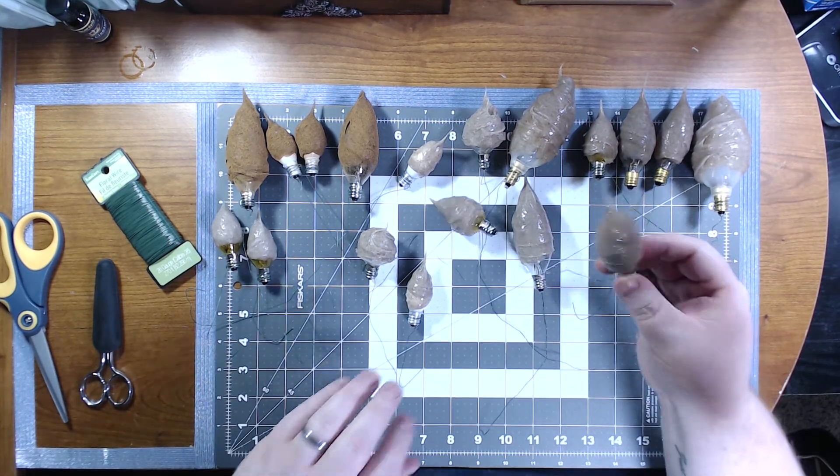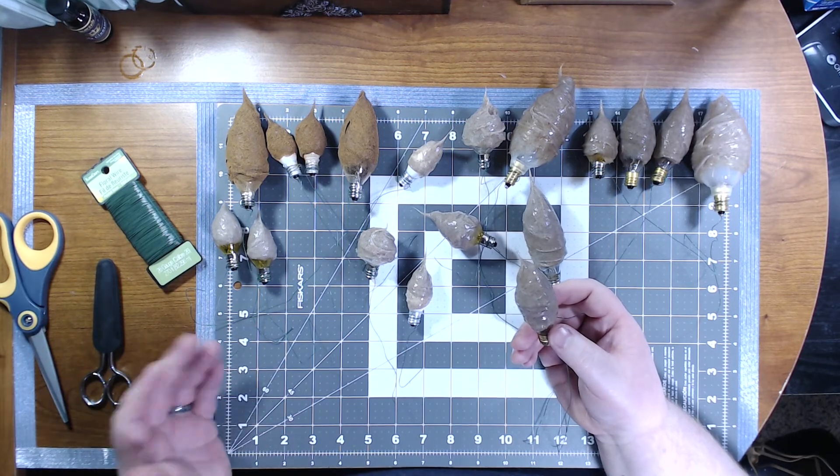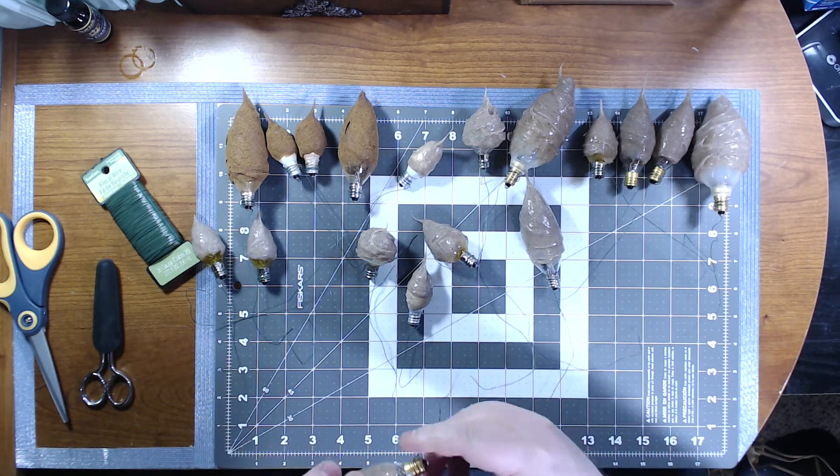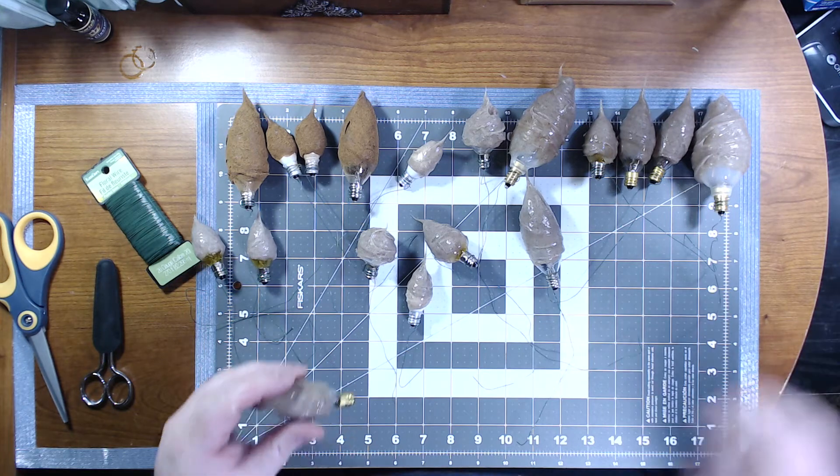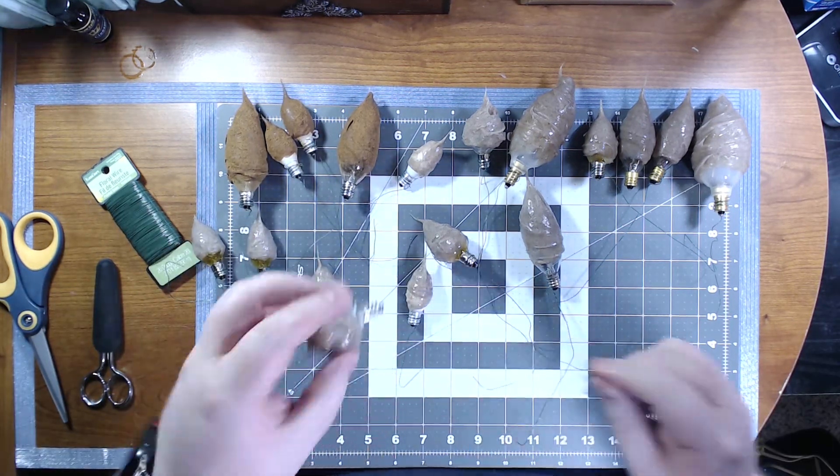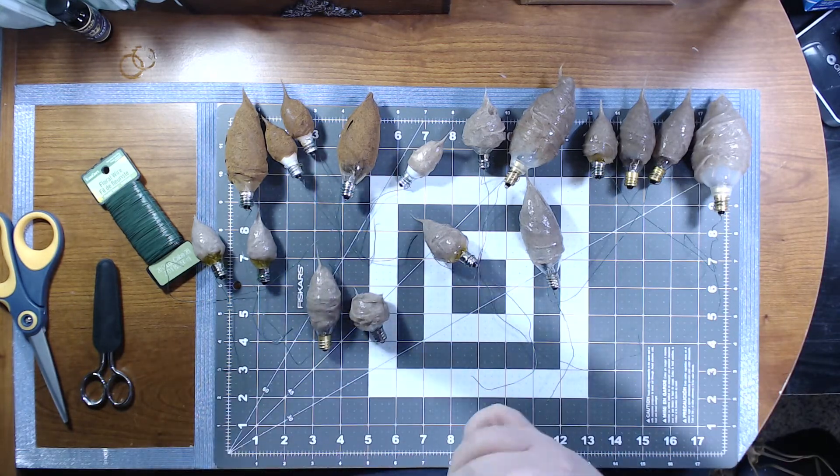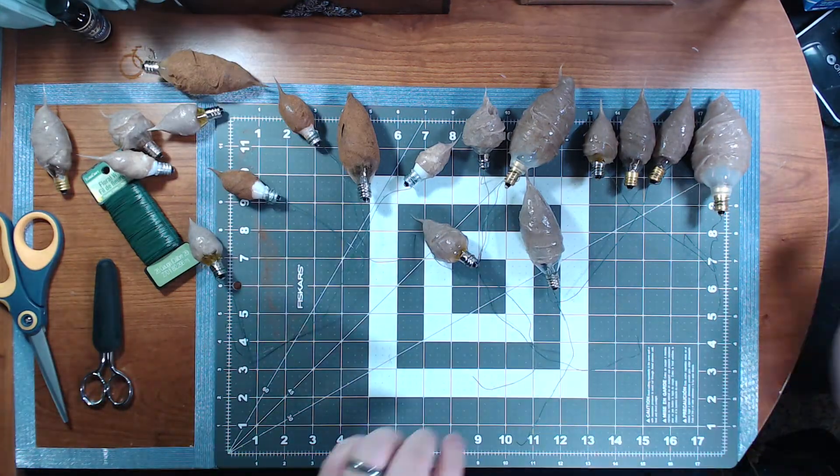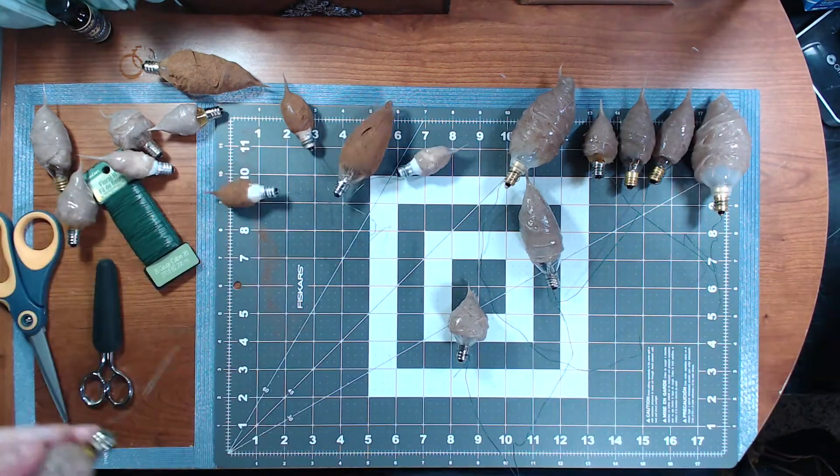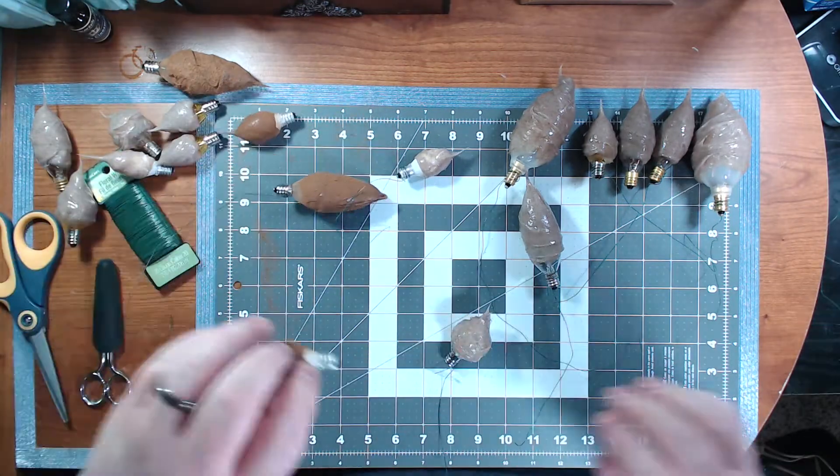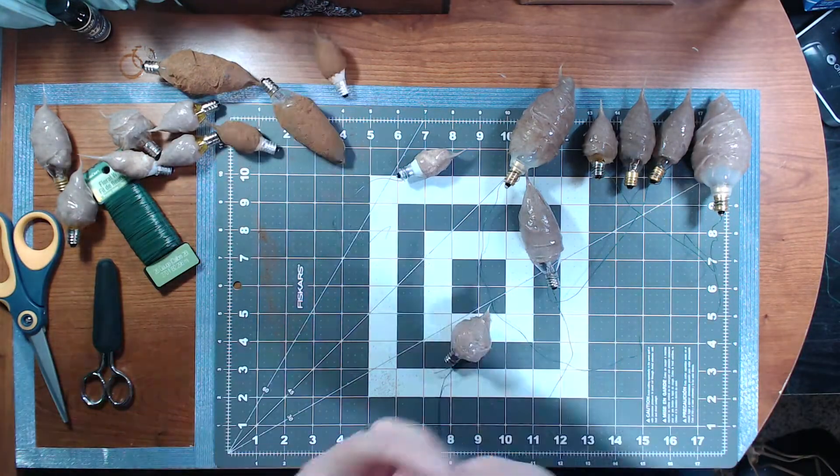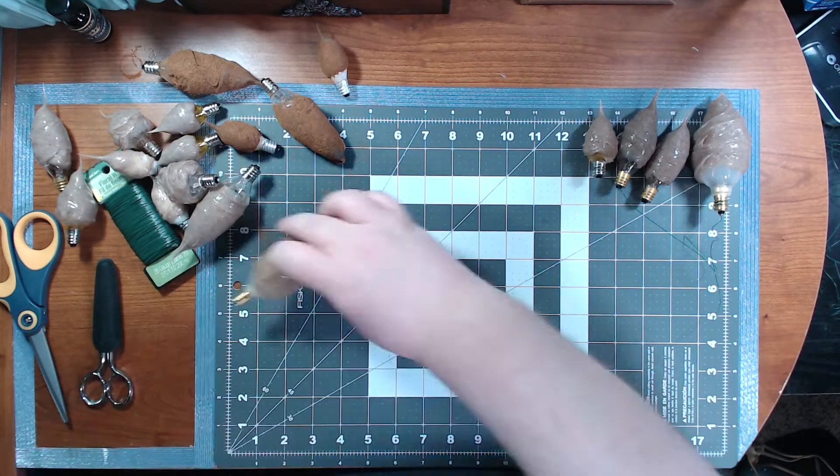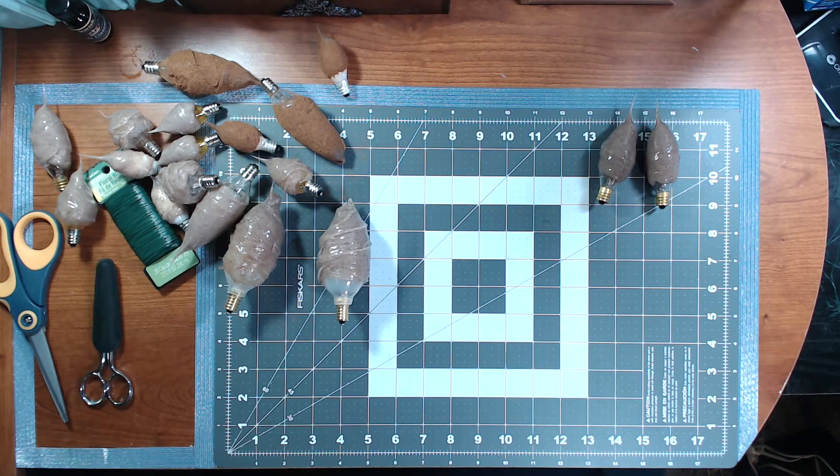Okay guys, so they've all dried. And as you can see, I did quite a few of them because I want to use up all the silicone that I had. Because once you mix it all up, I don't think you can really preserve it or keep it. So to undo this, you should be able to just pull them off.